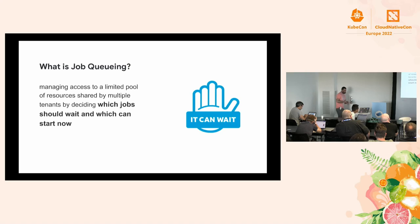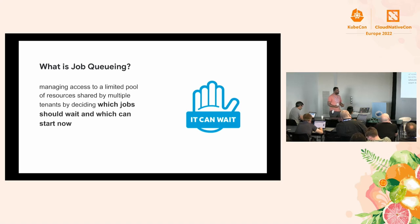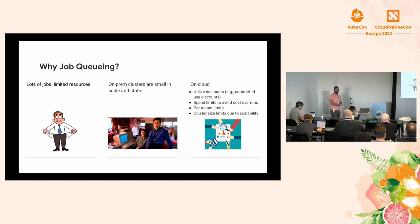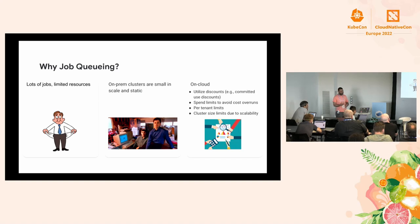So what do we mean by job queuing here? We're trying to decide which jobs should wait and which job can start right now. And why do we need job queuing? In most cases we have lots of jobs that need to be processed but a limited amount of resources, so we need to maximize utilization of those resources. If some jobs can't fit right now, we need to decide which ones should start and which ones should wait.